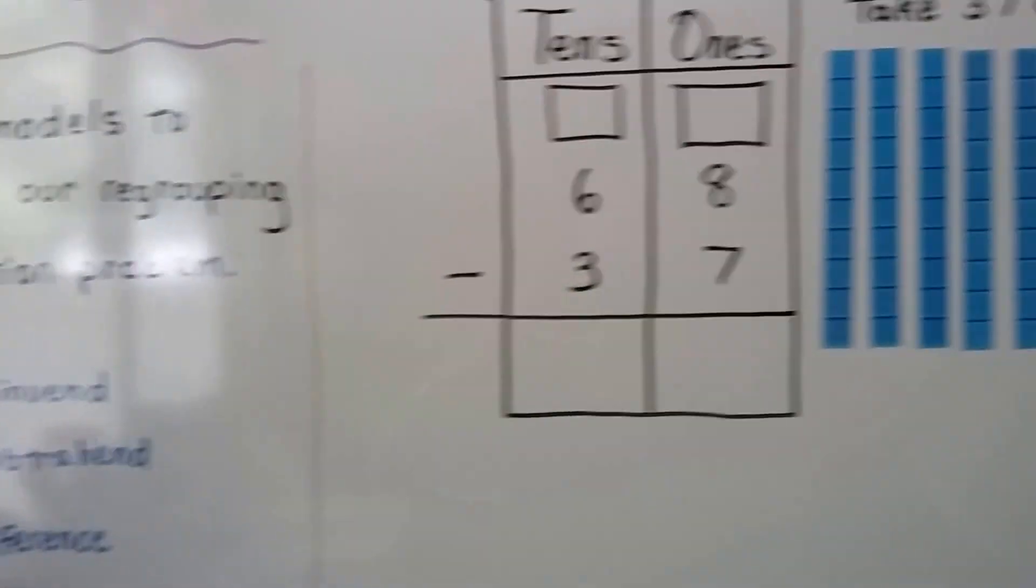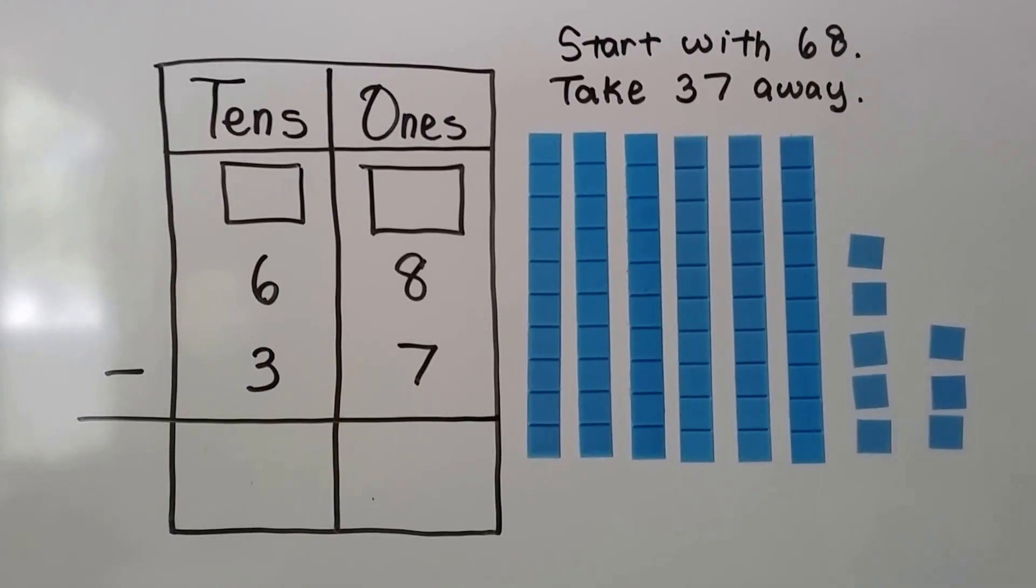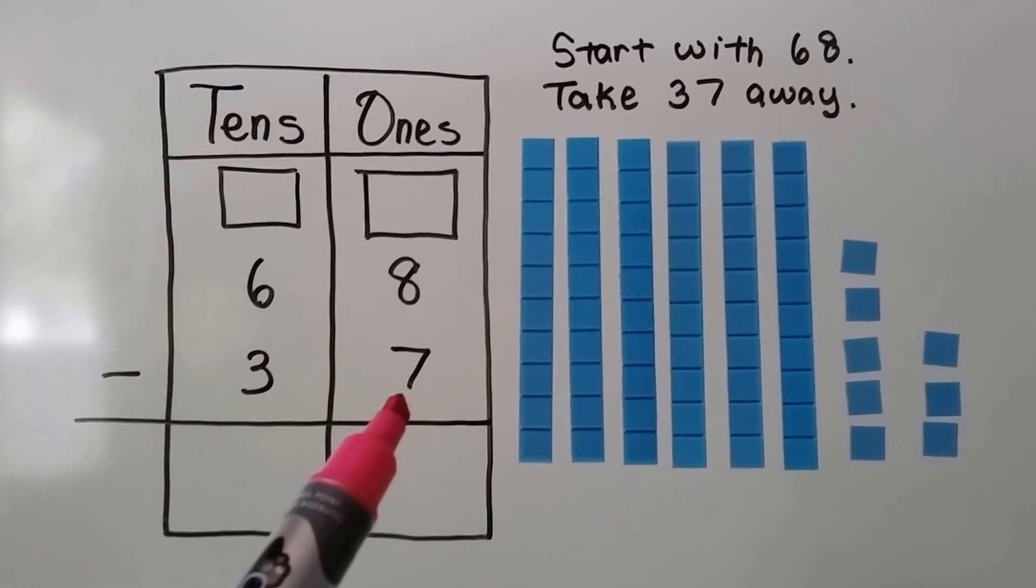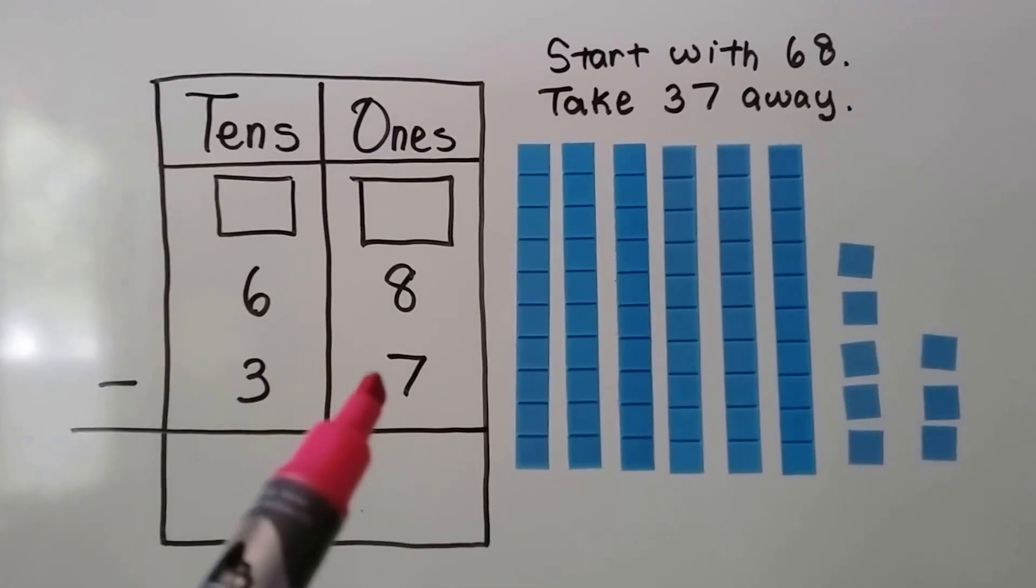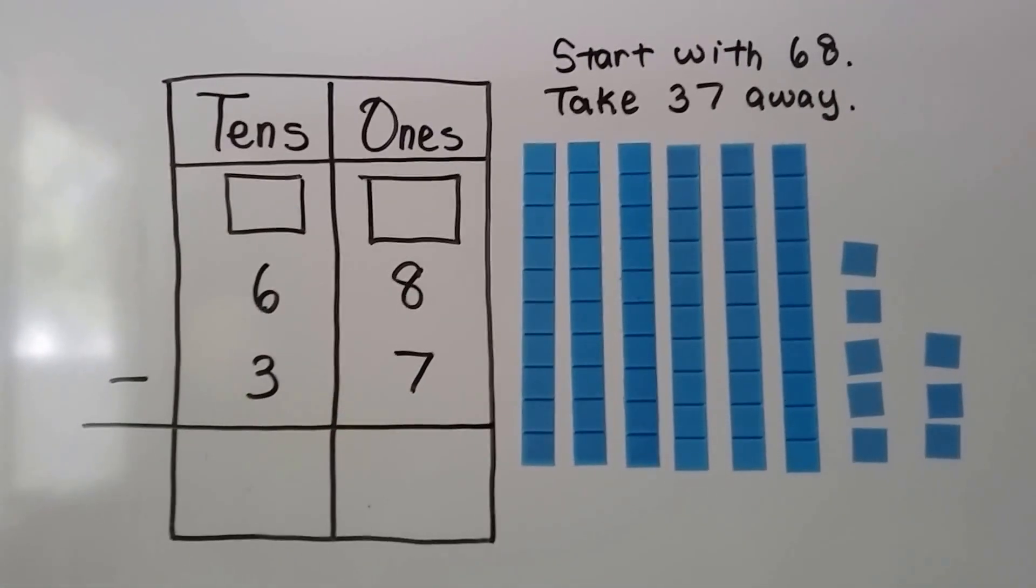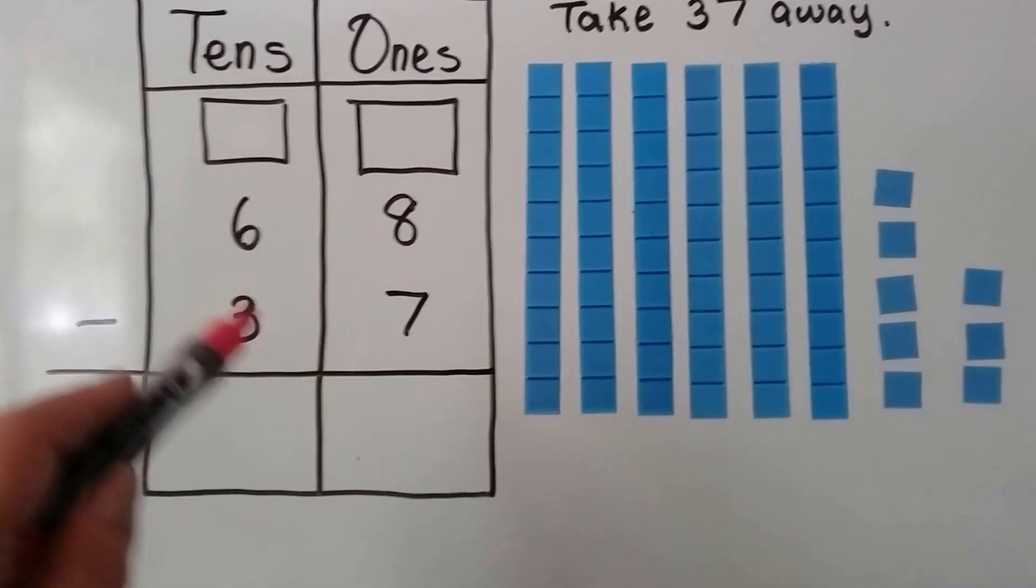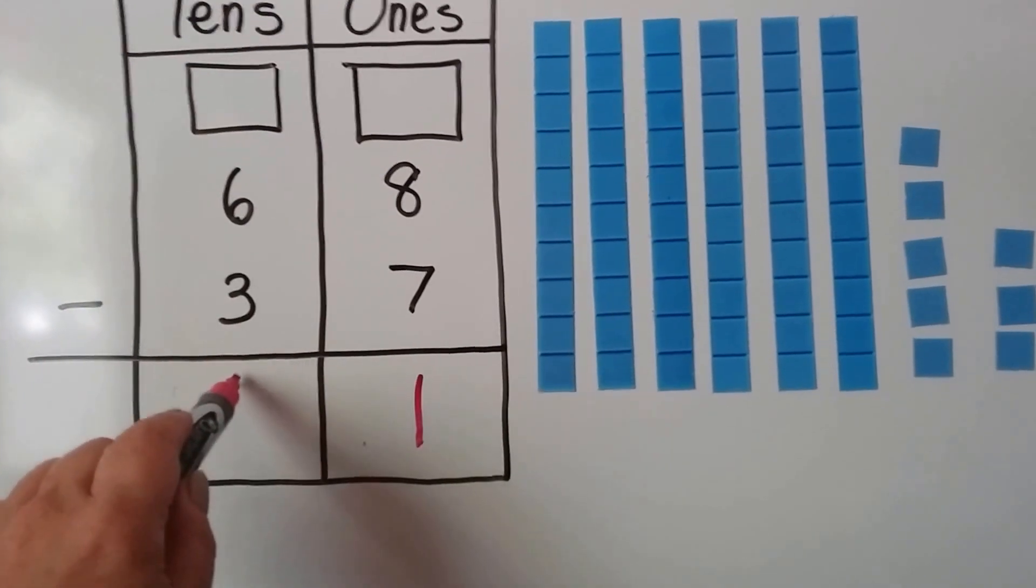Let's try it again. We have 68 minus 37. Do we need to regroup? We look at the ones place in the subtrahend, it's a 7, and the ones place in the minuend, it's an 8. This is less than the 8. So no, we don't need to regroup. We can just subtract. 8 minus 7 is 1, and 6 minus 3 is 3.